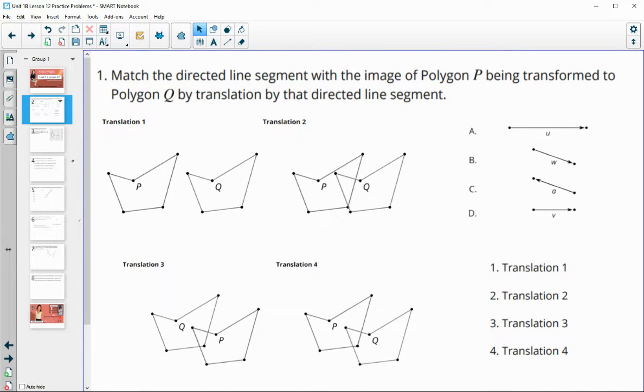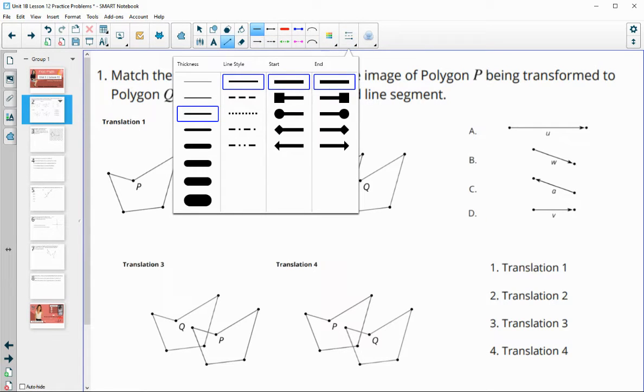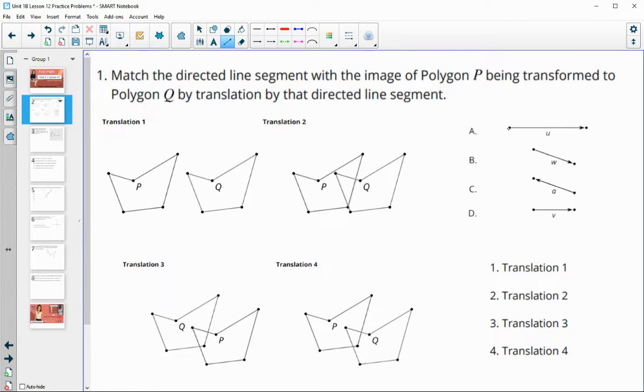Number one says match the directed line segment with the image of polygon P being transformed to Q. So that's meaning that P is the first and Q is the second. So when we're taking a look at these, it's going to be kind of nice on the screen here because I'm going to be able to just pick it up and move it so we can see.